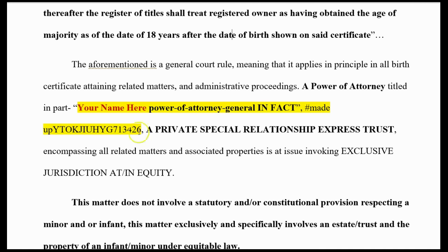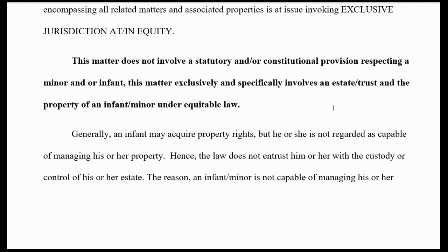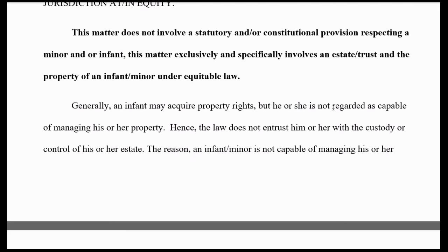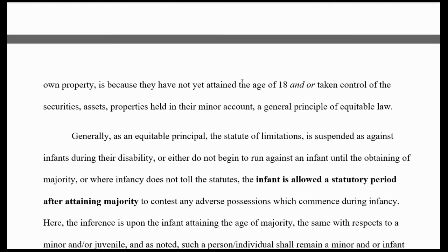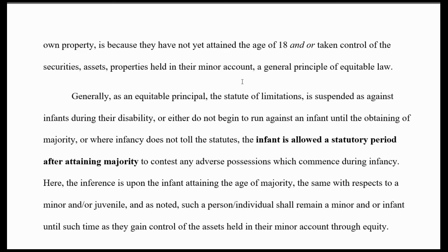What it's saying is: once you wake up and know how to act accordingly, and you simply make a certificate claim — just words as an affidavit with a copy of the birth certificate attached — you now have that claim. You can do that in court or wherever you have to. This whole document does that. This gets you to a power of attorney — there's a way you can also do a power of attorney that they default on, appointing you with powers to direct things even further. This matter does not involve statutory or constitutional provisions. This matter exclusively involves an estate trust and the property of an infant minor under equitable law.